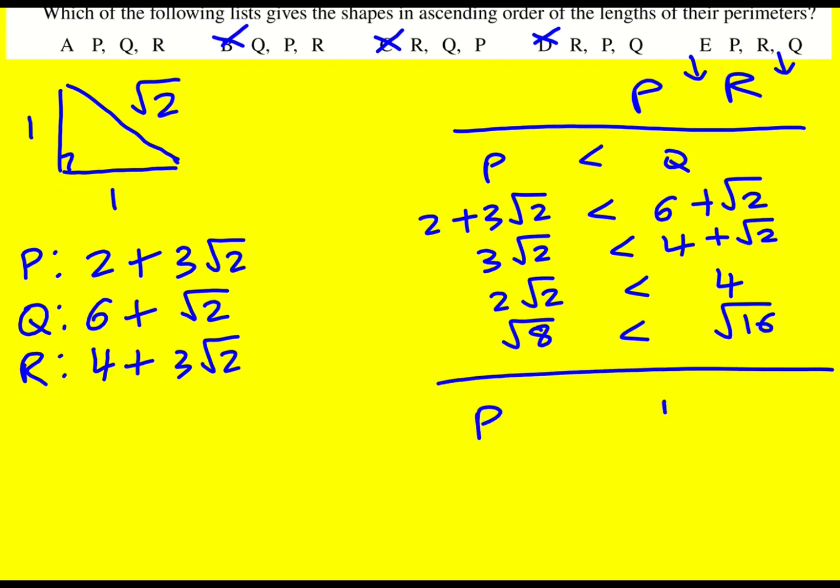Right, let's now compare P with R, R. 2 + 3√2 and 4, sorry not P with R, my bad. We've compared P with R, it's going to be R with Q.